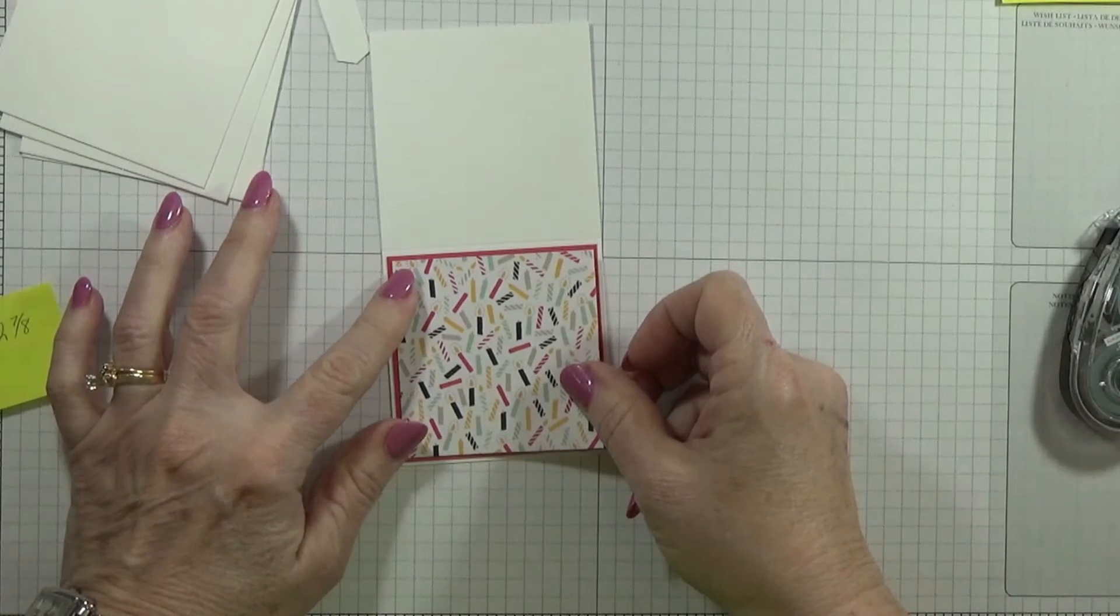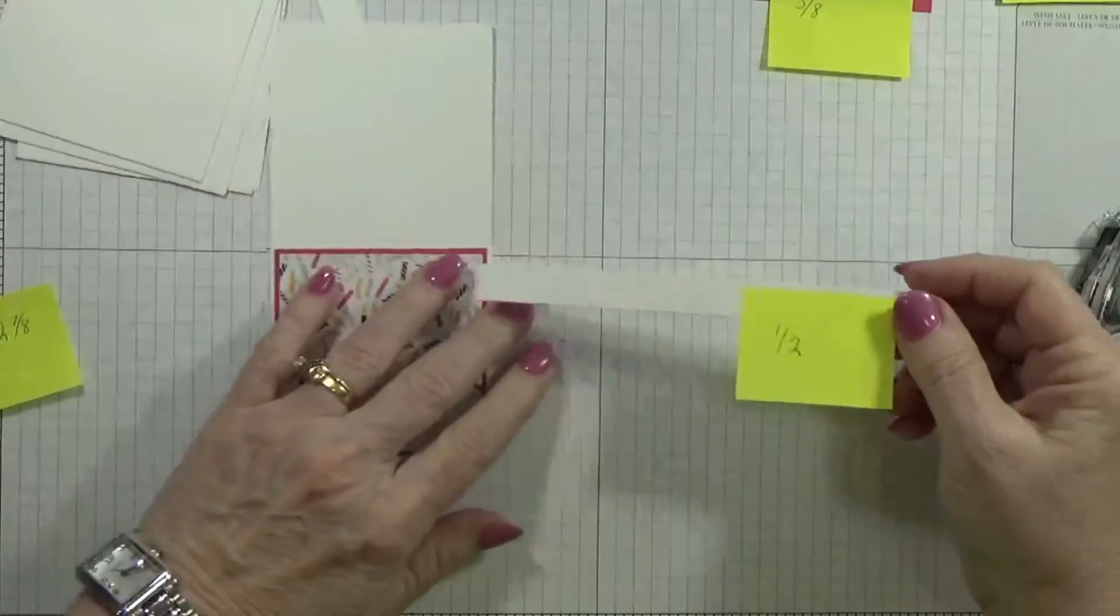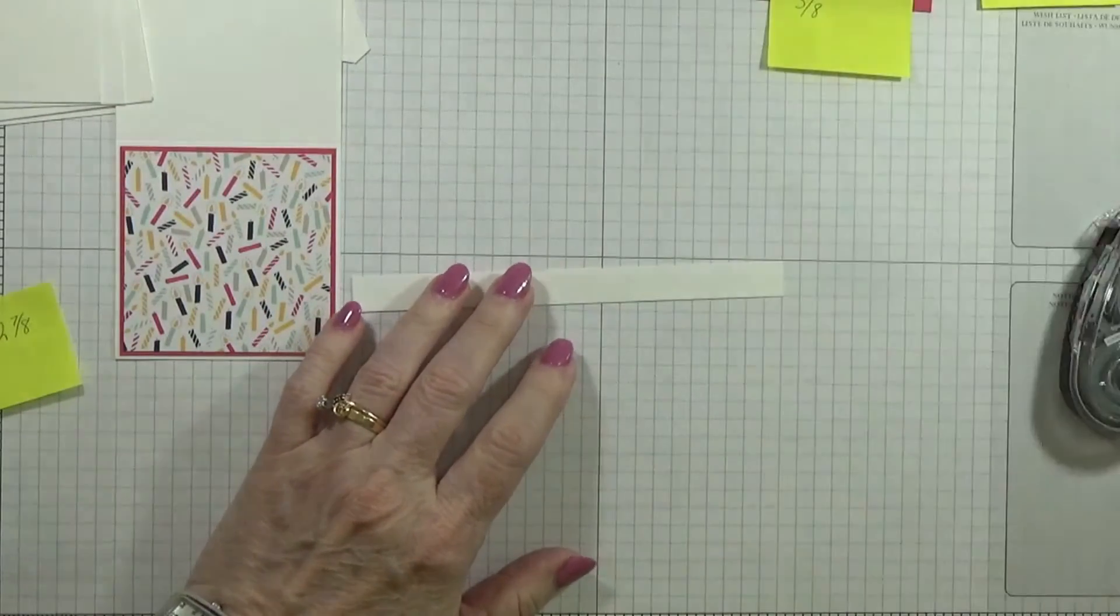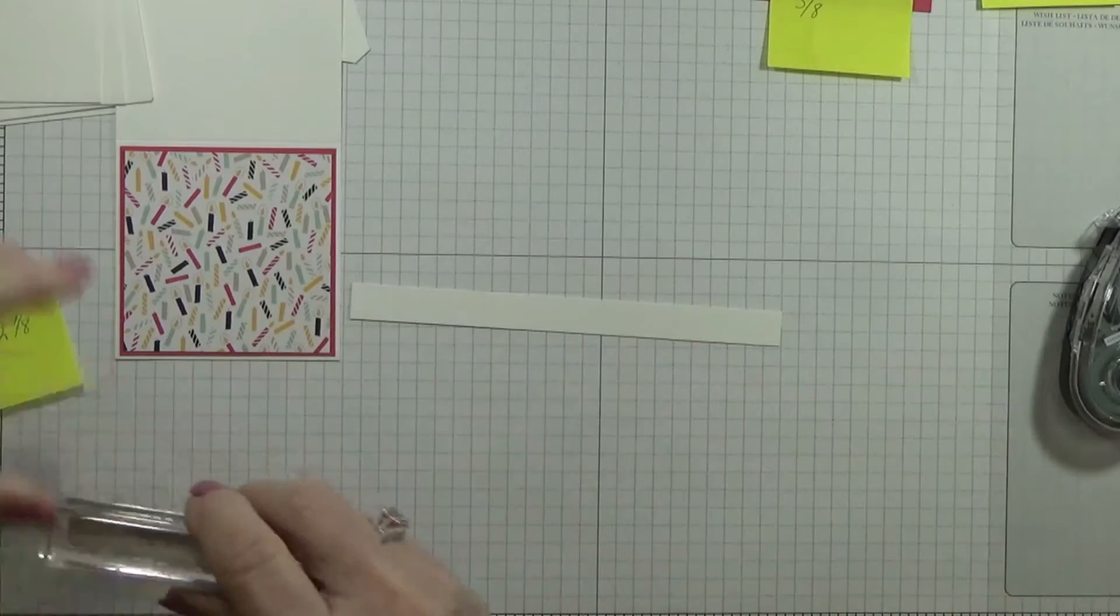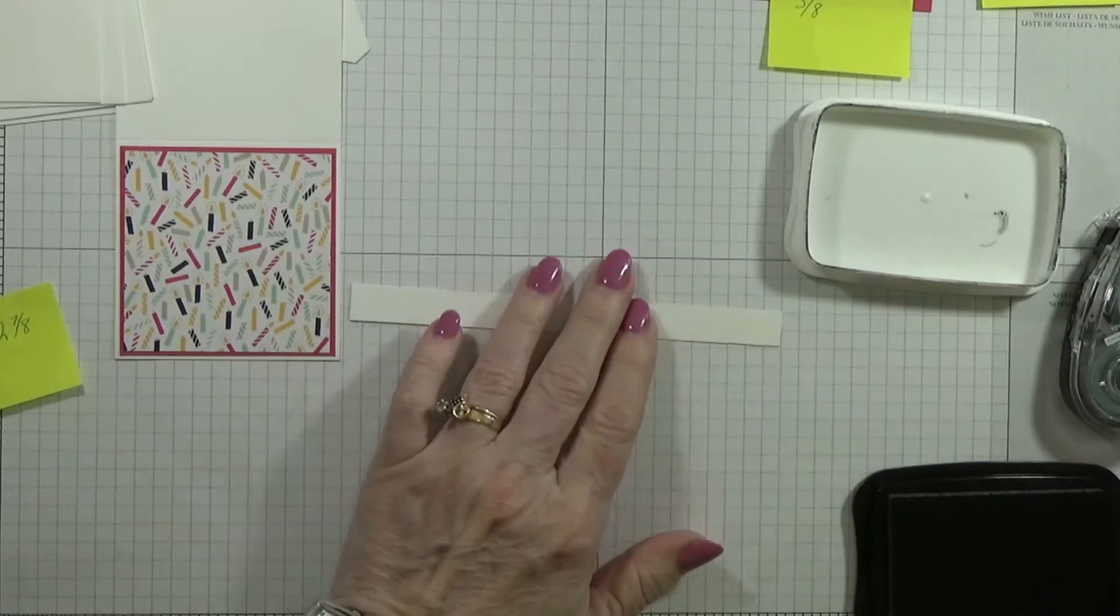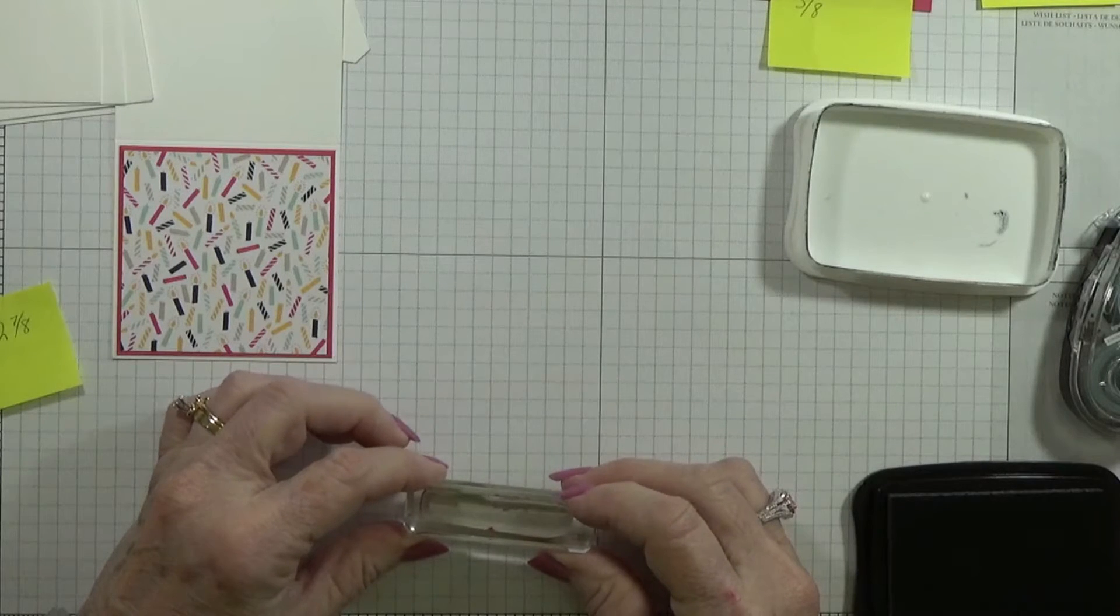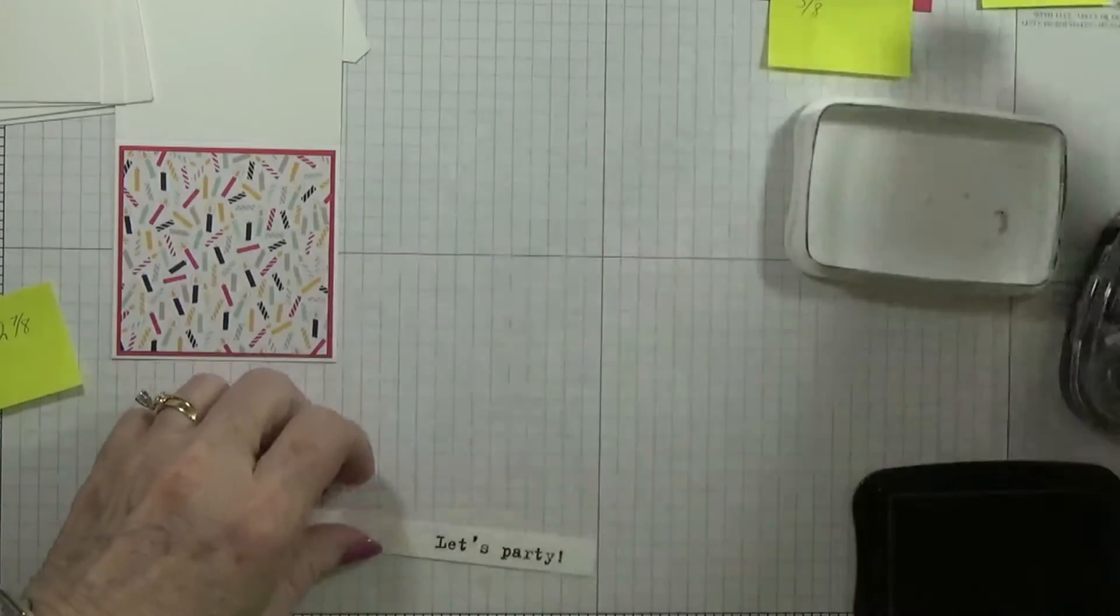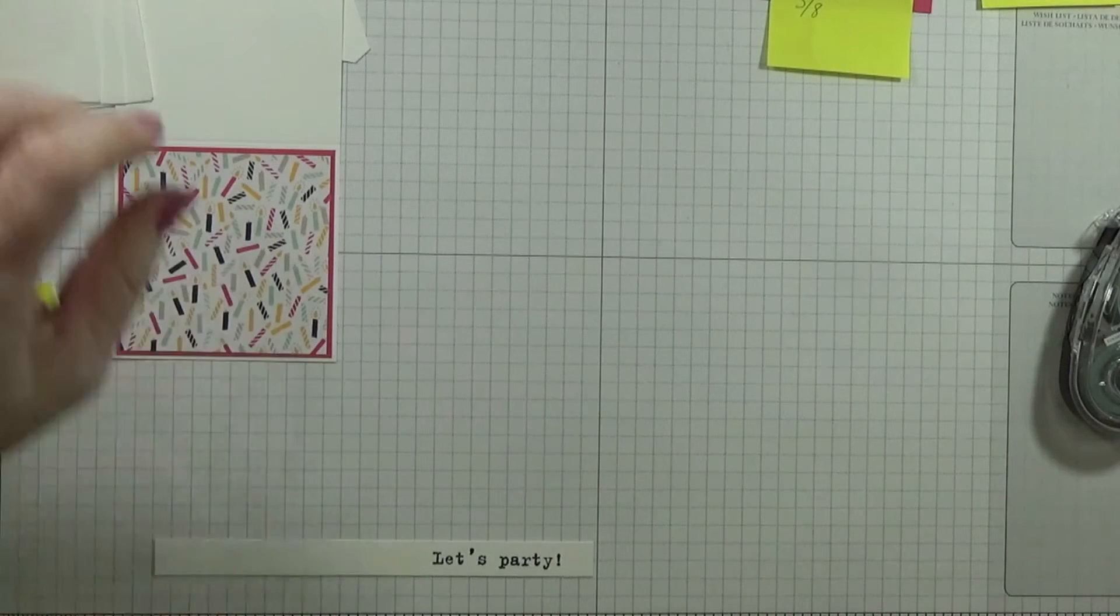And then on this, I have a small strip here that is cut at half an inch. This is where I'm going to take my Let's Party, get it straight up, and I'm going to use Memento ink. I'm just going to stamp it right down here. I'm sorry if my head gets in the way. I'm trying to get this right in the middle. There we go, I did it. Close this up. That's all I'm going to use of the black.